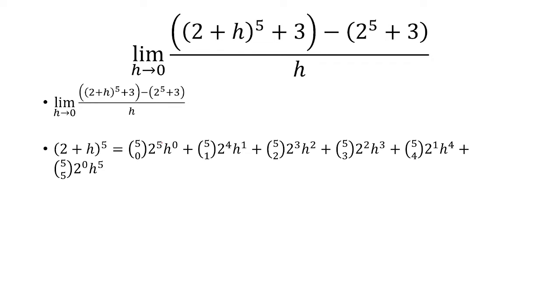And then 2 to the 5th goes down to the 4th, 2 to the 3rd, squared, first, and then 0. And then the exponent of h starts at 0, goes up by 1, and then ends up at 5.